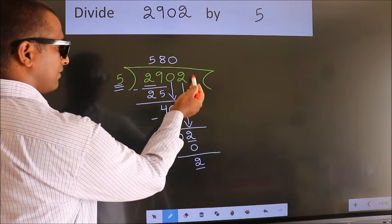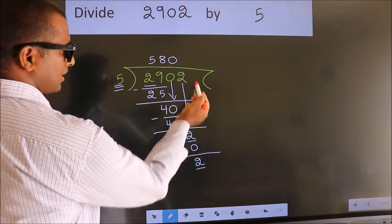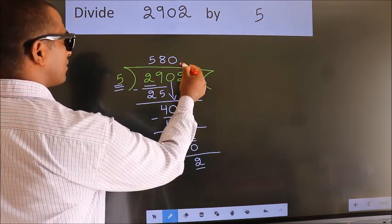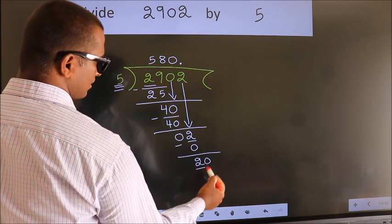And we did not bring any number down, so now we can put the decimal point and take 0, making 20.